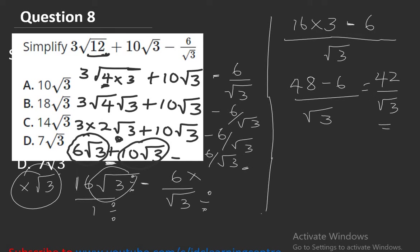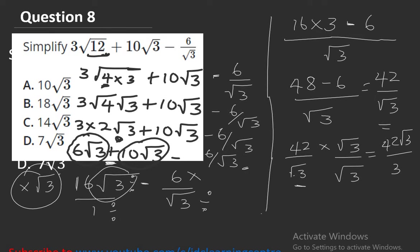42 over root 3 cannot be the final answer — we need to rationalize. We cannot have root 3 as a denominator. To rationalize, multiply numerator and denominator by root 3: root 3 times root 3 is 3, giving 42 root 3 over 3. Since 42 divided by 3 is 14, the final answer is 14 root 3. The right option is C.